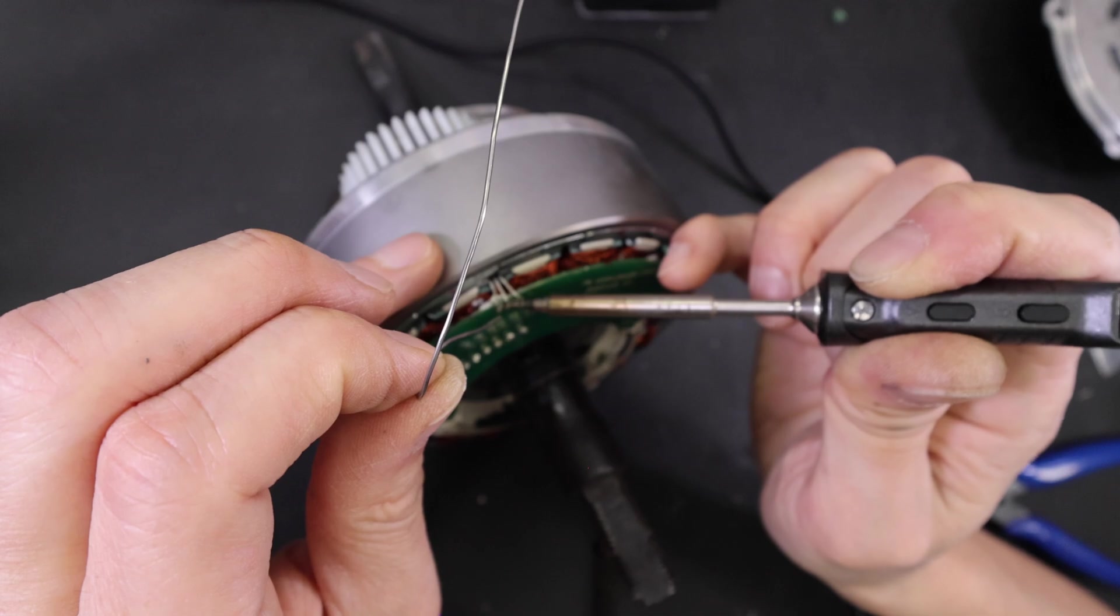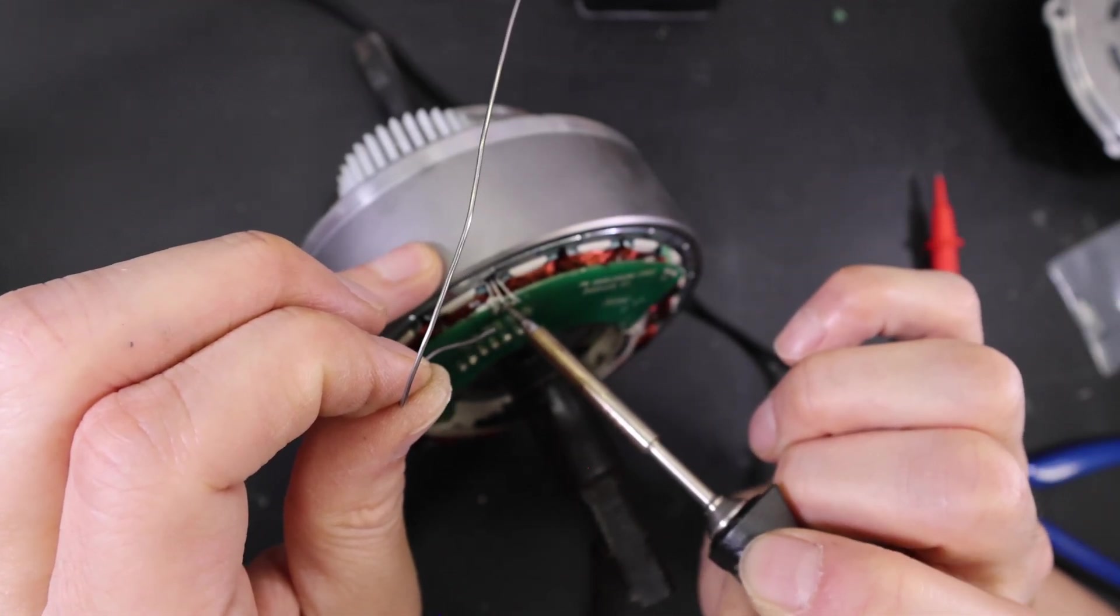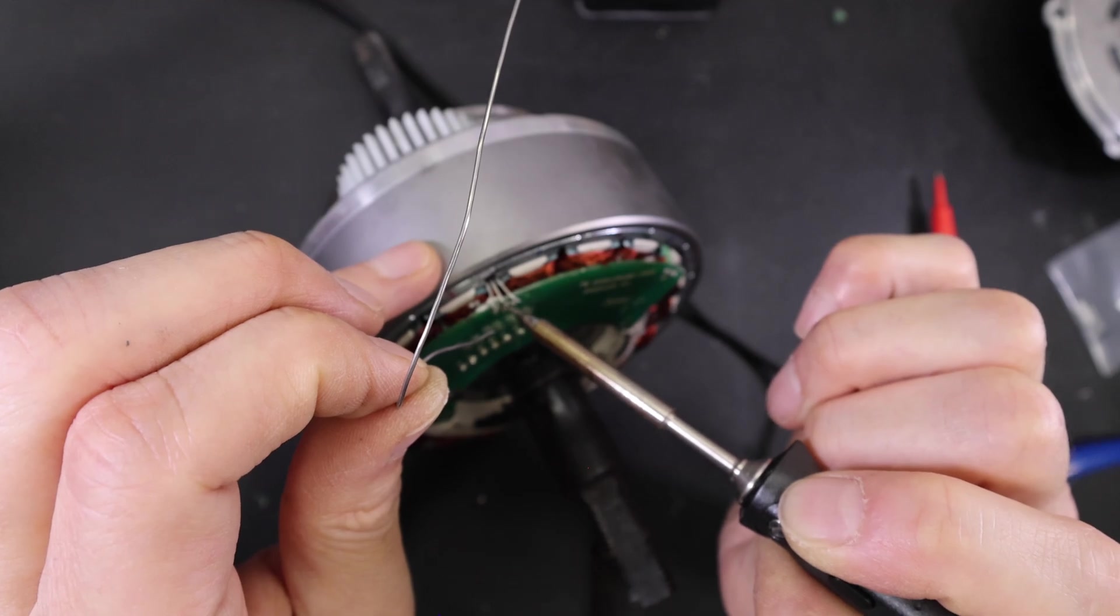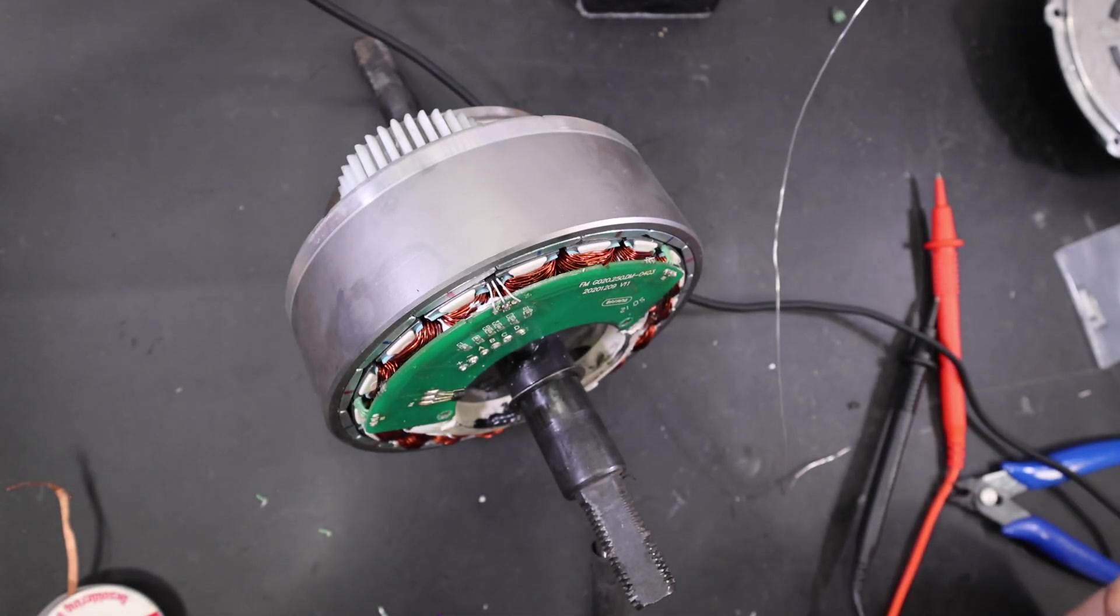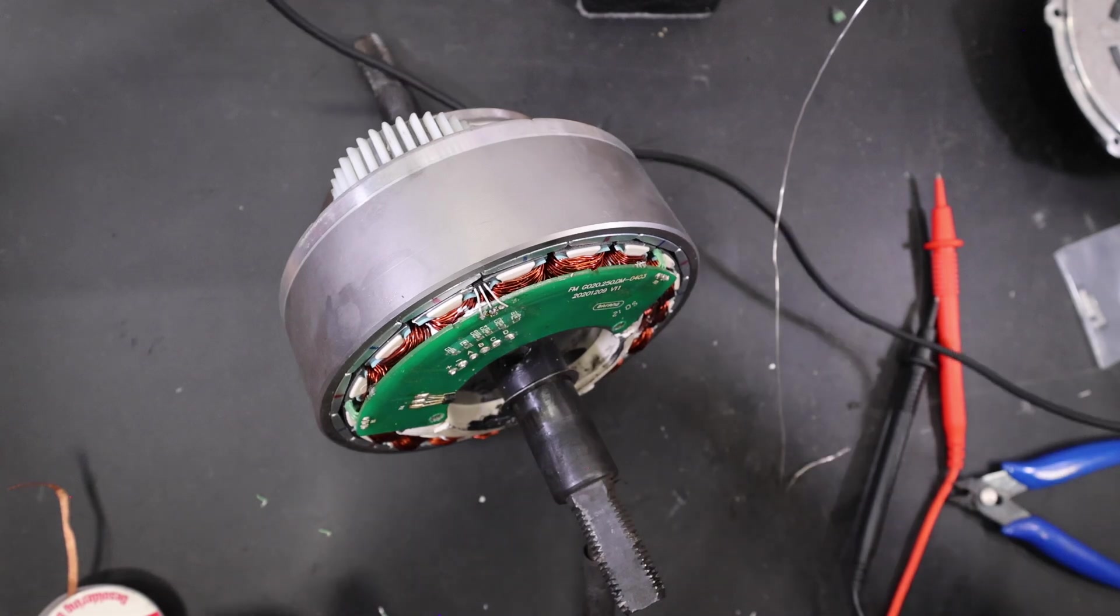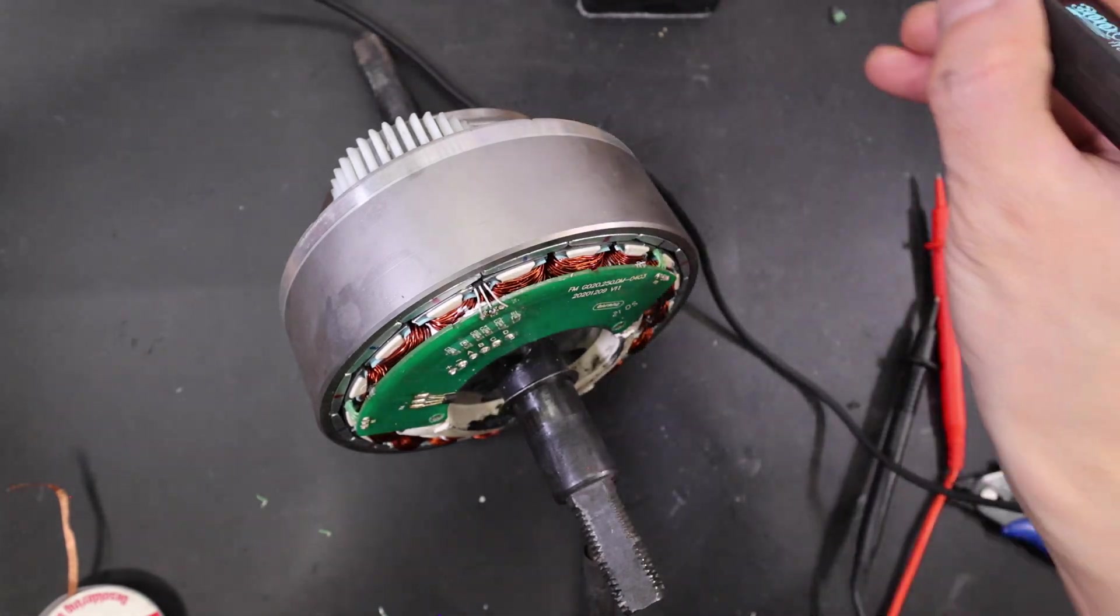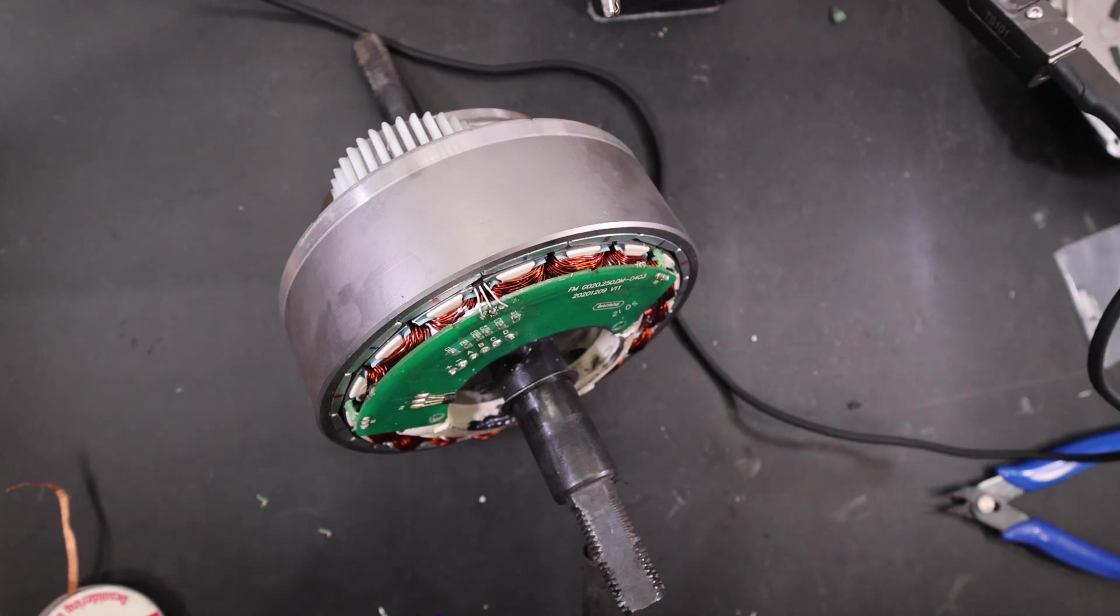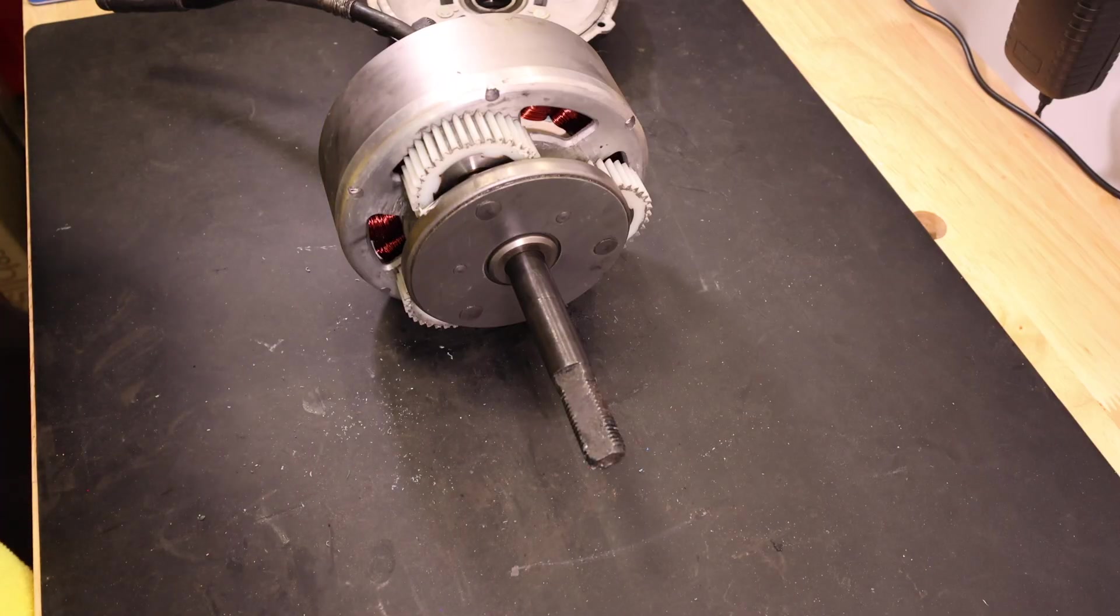All right, after soldering this on, you might want to put some five-minute epoxy on the legs of the hall sensor just to hold it a little more in place. And after you do that, you should have a working hall sensor. And I just double-checked by just testing the continuity between the wires and the actual legs on the hall sensor.